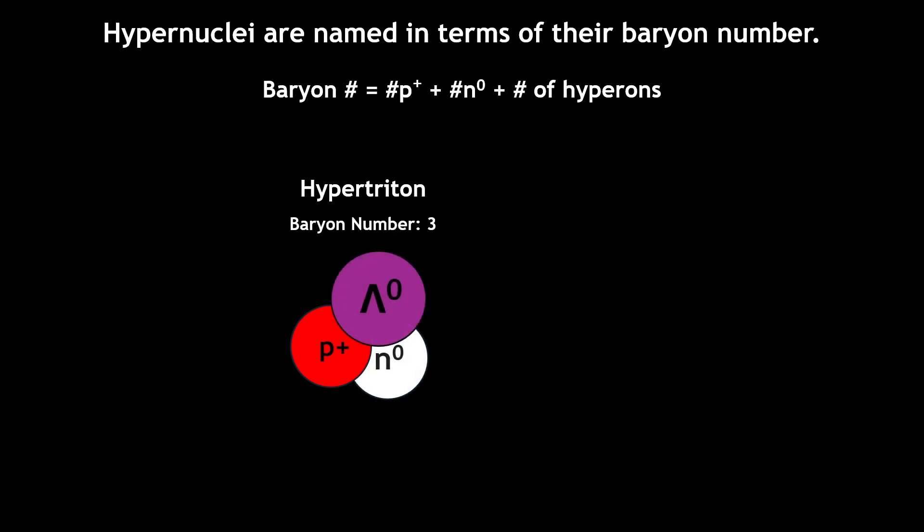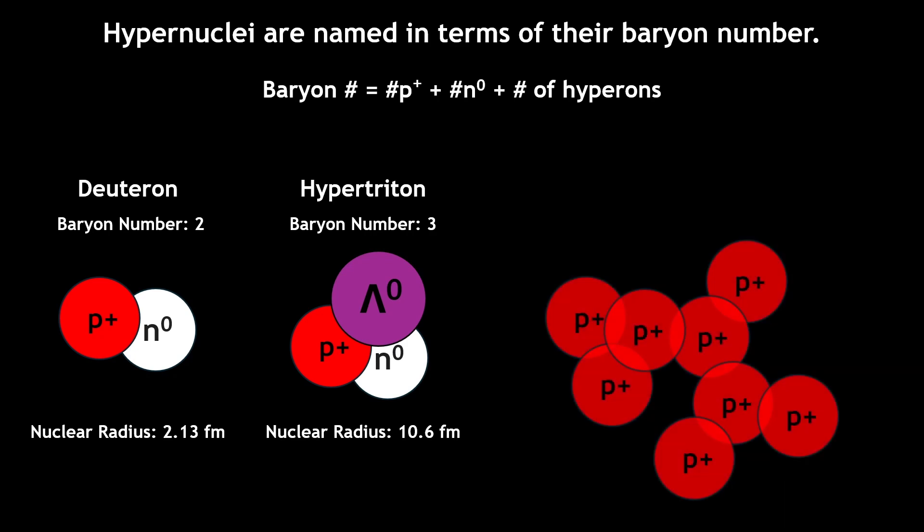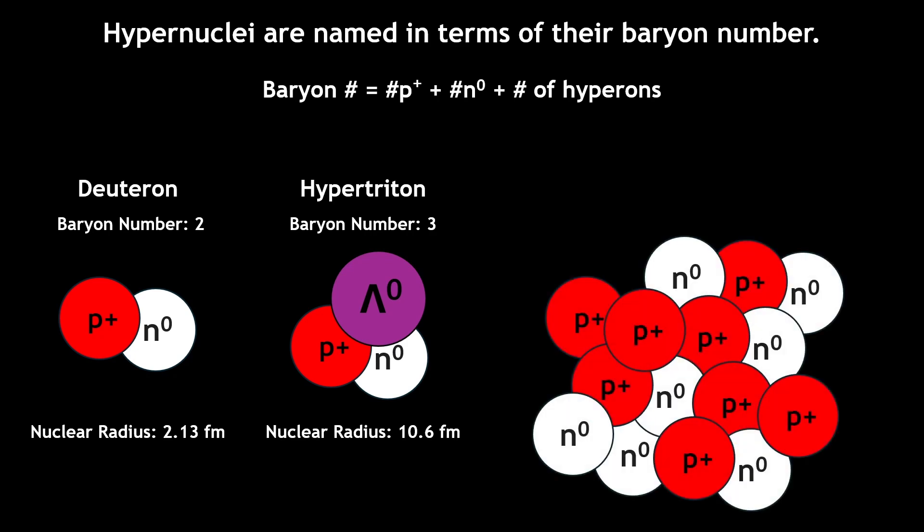This hypernucleus is very loosely bound, with a nuclear radius nearly five times larger than the deuteron, which is a typical hydrogen-2 nucleus. There are larger hypernuclei that resemble typical atomic nuclei. For example, a hypernucleus containing eight protons, seven neutrons, and one lambda baryon is classified as an oxygen-16 lambda.